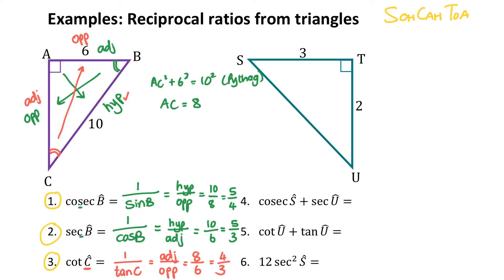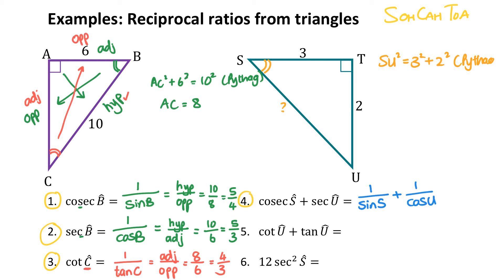We are on question 4: cosec of S plus sec of U. Cosec of S will be 1 out of sin of S, and sec of U will be 1 out of cos of U. These two ratios deal with different angles. Sin of S refers to opposite over hypotenuse, so I'm going to use hypotenuse over opposite. I'm missing some information, so SU squared equals 3 squared plus 2 squared by Pythagoras, giving SU equal to the square root of 13, which is the hypotenuse.